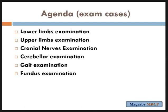The most commonly requested tasks are: examine upper limbs, examine lower limbs, examine cranial nerves, examine the cerebellum, or sometimes you need to examine the cerebellum plus the upper or lower limb, or examine the cerebellum plus the cranial nerves.